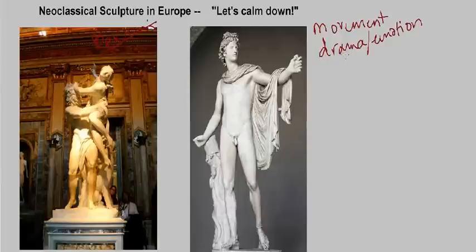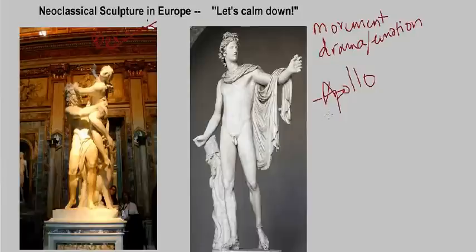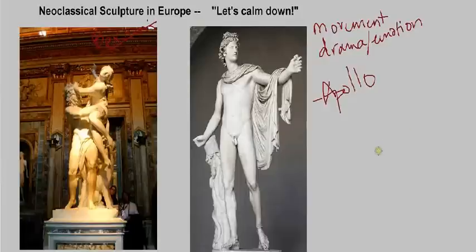That is not what neoclassical sculptors were interested in. They wanted to get away from this style of sculpture and return to works like this one — a sculpture of Apollo. It's actually a Roman copy of a Greek sculpture dating to the 4th century BCE. How would you compare this to Bernini? Well, there's not as much movement, drama, or emotion. It's really pared down, rather restrained and dignified. It's a very different approach to sculpture and the human form. This is more what neoclassical artists wanted to replicate.